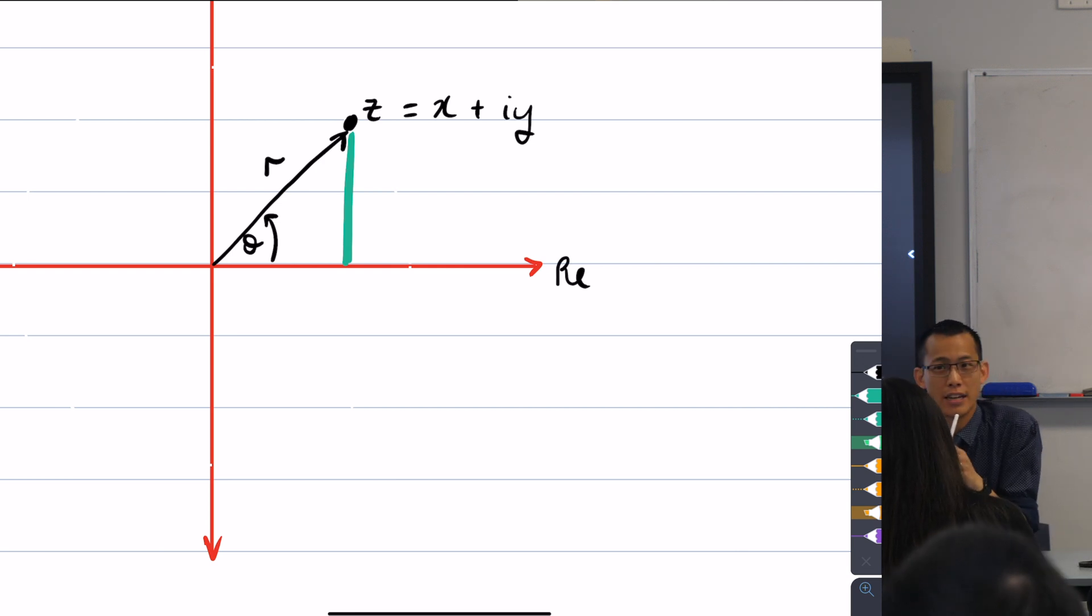That distance that I've just drawn in green, how far up is it? You actually know based on the information we provided. It's y, isn't it? Because that's how high up you are. So I'm going to label that guy as y.